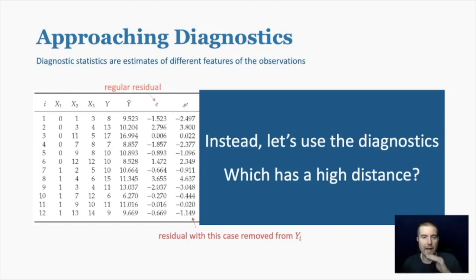So you have these two points that may be kind of far away from what the model predicts them to be. So let's keep that in mind. We have case 8 and 2 that look like they could be extreme. Let's see what the other measures say about them.